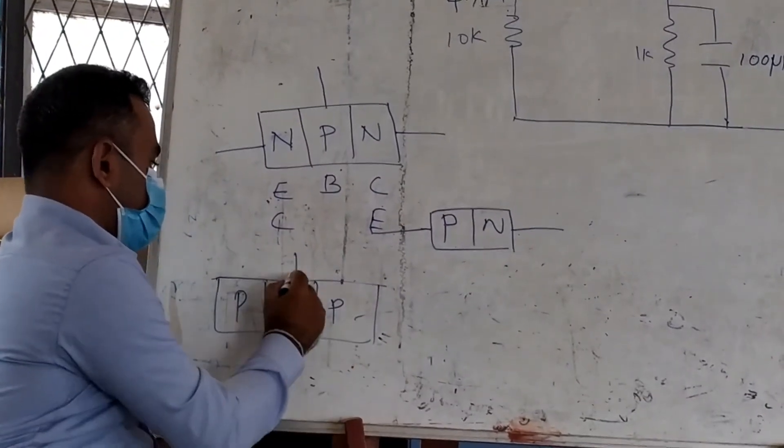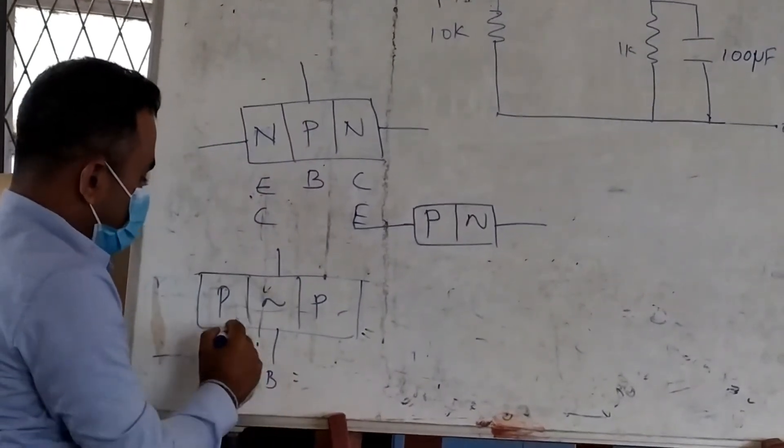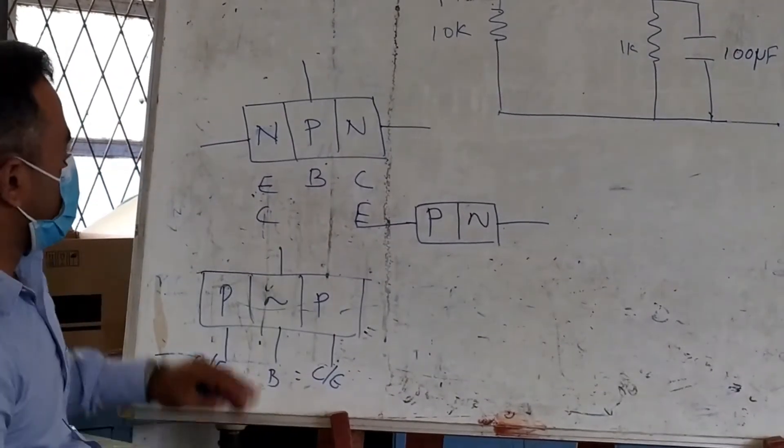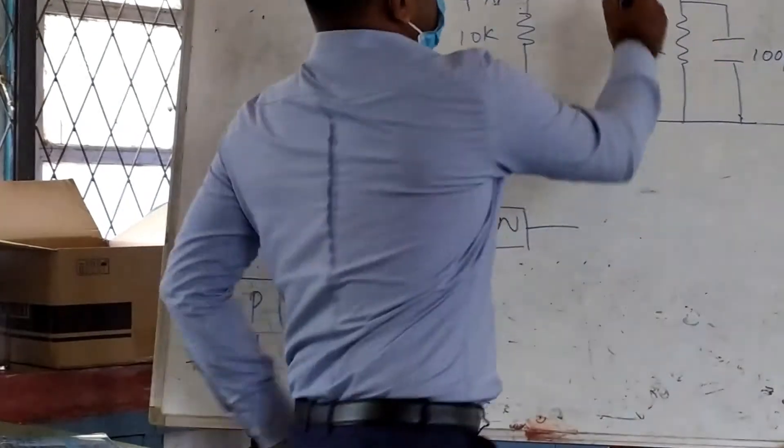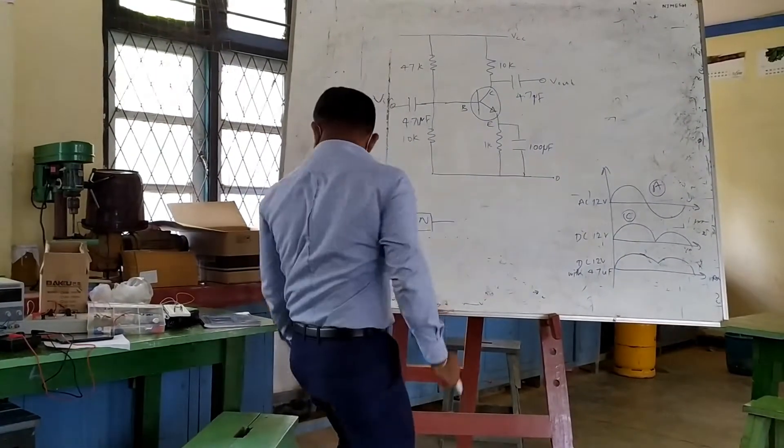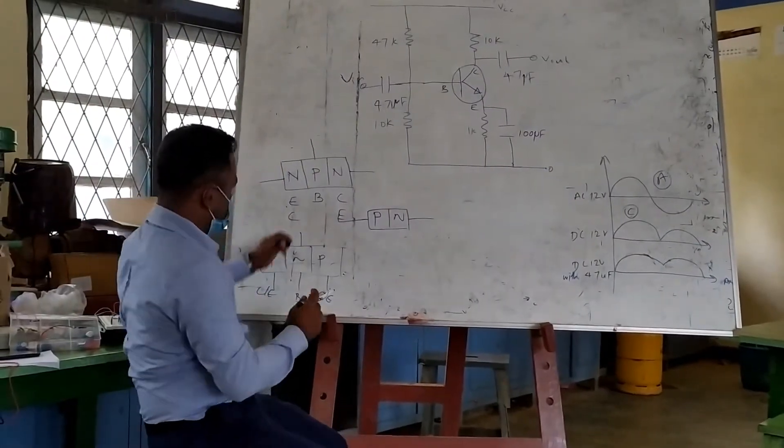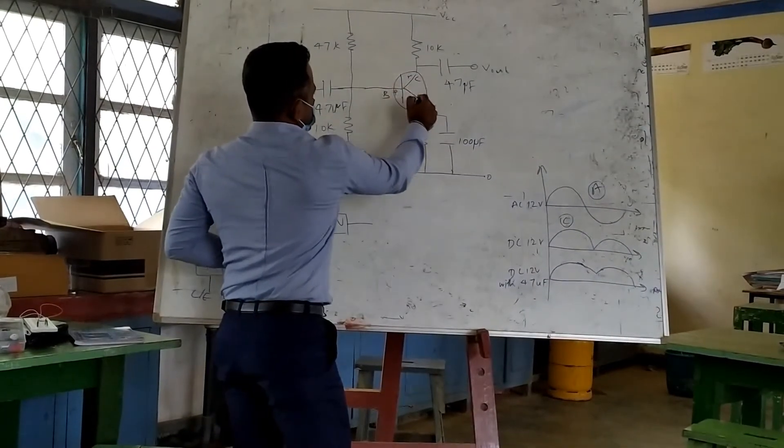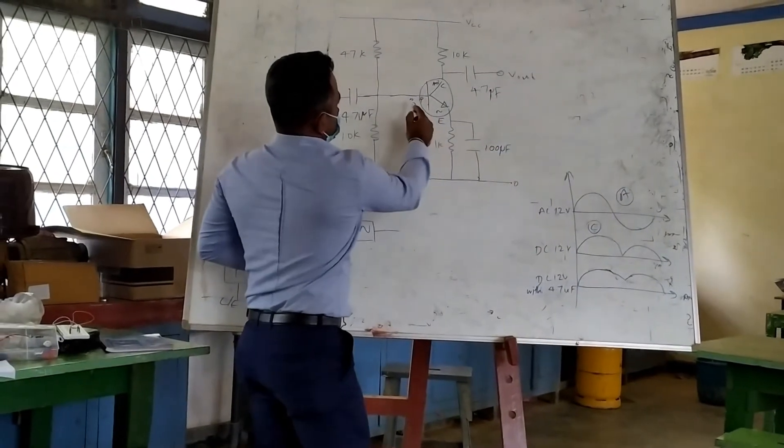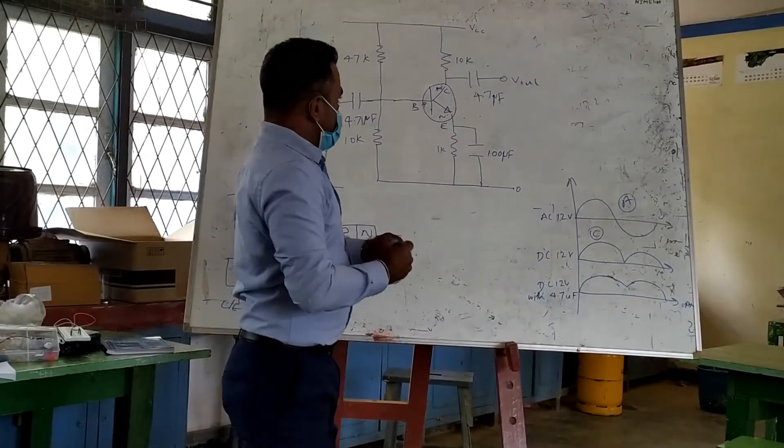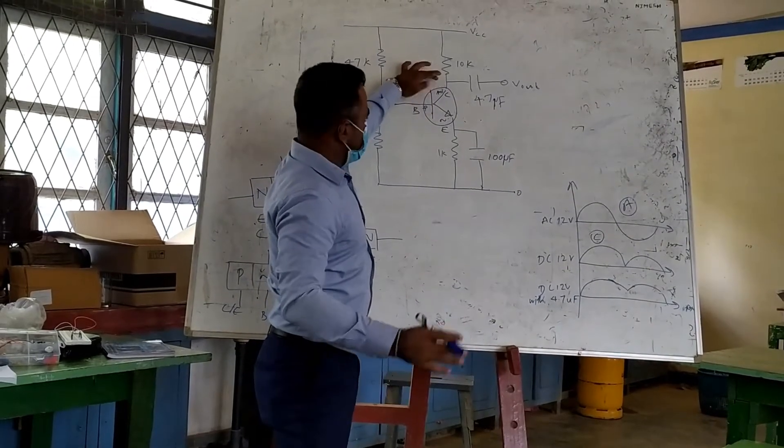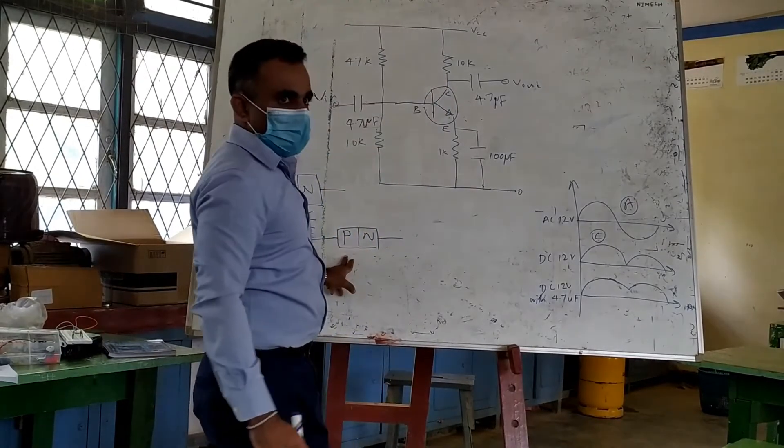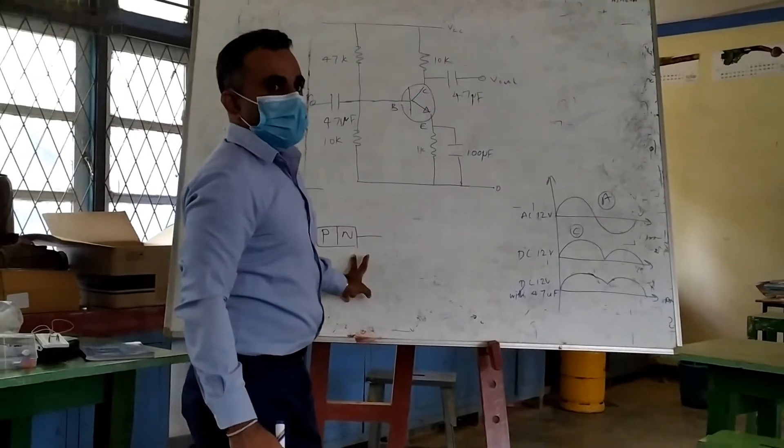Make a base. Make a collector emitter. Make a base. Make a collector emitter. Make a P, make an N, make a T.